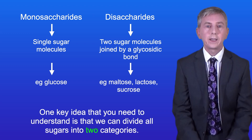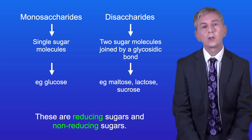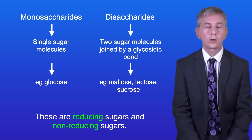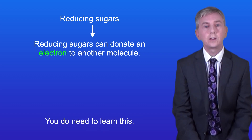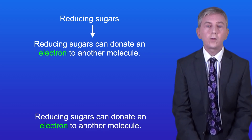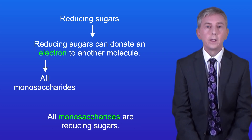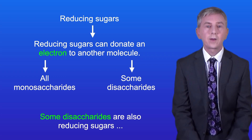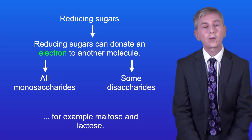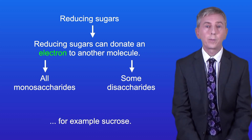One key idea you need to understand is that we can divide all sugars into two categories: reducing sugars and non-reducing sugars. Reducing sugars can donate an electron to another molecule. All monosaccharides are reducing sugars. Some disaccharides are also reducing sugars, for example maltose and lactose. However some disaccharides are non-reducing sugars, for example sucrose.